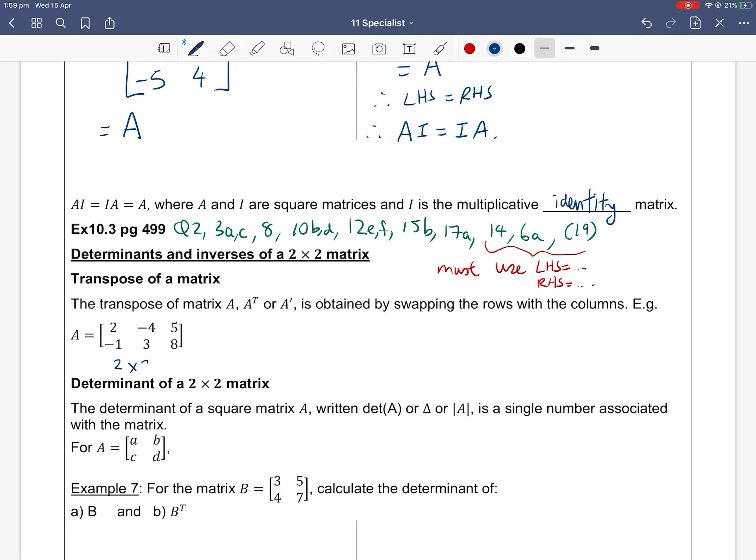So we're given this 2×3 matrix - two rows by three columns. Then the transpose A^T is whatever your first row is now becomes your column, and whatever was your first column becomes